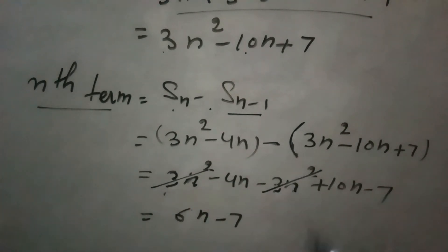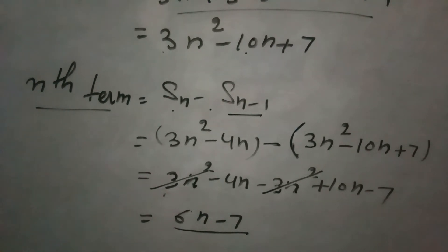3n² and 3n² cancel each other, so we are left with 6n minus 7. Therefore, the nth term of this AP will be 6n minus 7.